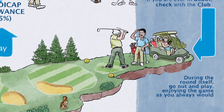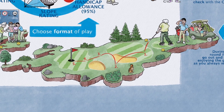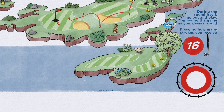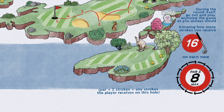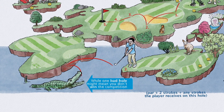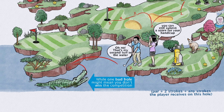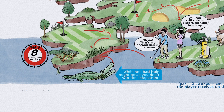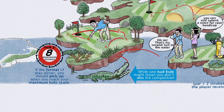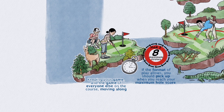During the round itself, go out and play, enjoying the game as you always would. Knowing how many strokes you receive for the round also lets you know the maximum number of strokes that you'll receive on each hole. While one bad hole might mean you don't win the competition, you can still submit an acceptable score for handicap purposes. If the format of play allows, you should pick up when you reach your maximum hole score, keeping your game and the game of everyone else on the course moving along.